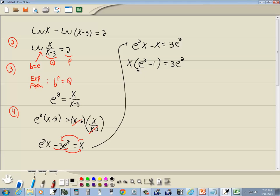And then we want to get x by itself. So we're going to divide both sides by what's behind our x, which is e squared minus 1.